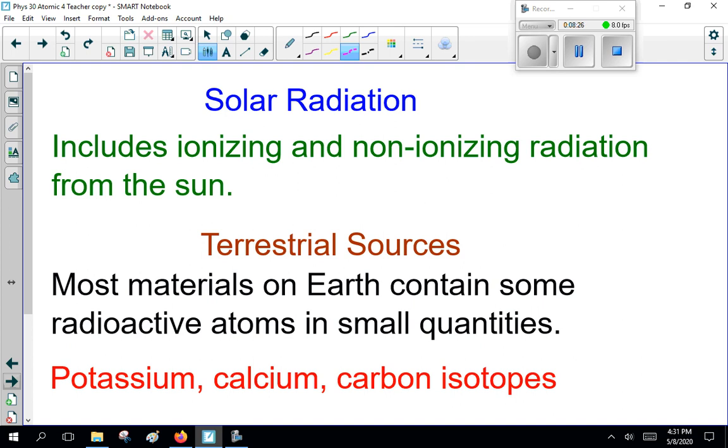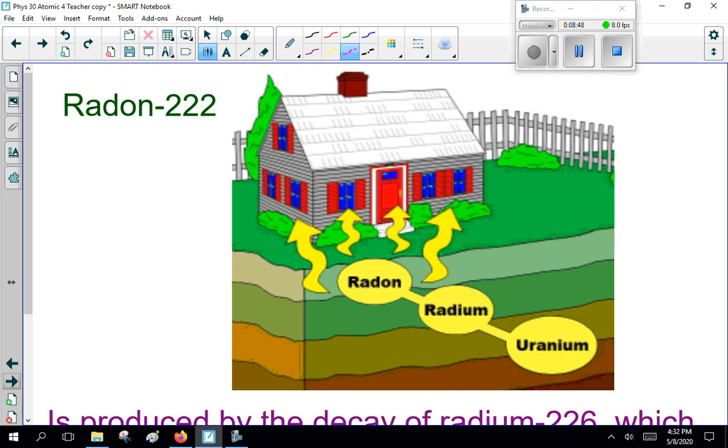Now, solar radiation, including ionizing and non-ionizing radiation from the sun, that's stuff given off by the sun. Some of it, like x-rays and gamma rays, will go through the atmosphere fairly well. Some will be absorbed by the atmosphere to protect us. So yes, there's radiation all around us, it's just mostly small amounts that doesn't hurt us. Now, the terrestrial or Earth-bound sources, most materials on Earth contain some radioactive atoms in small quantities. So potassium, calcium, and carbon isotopes are the most common ones we see.